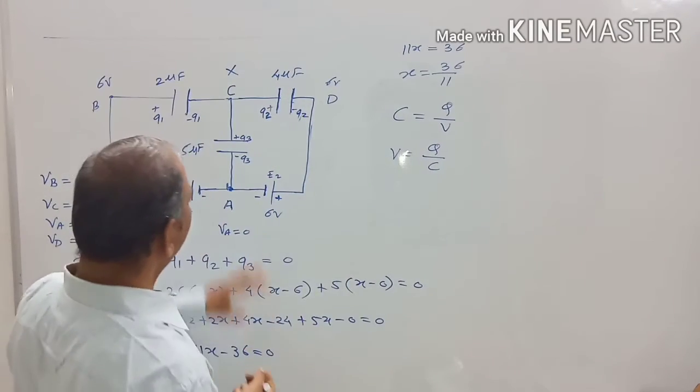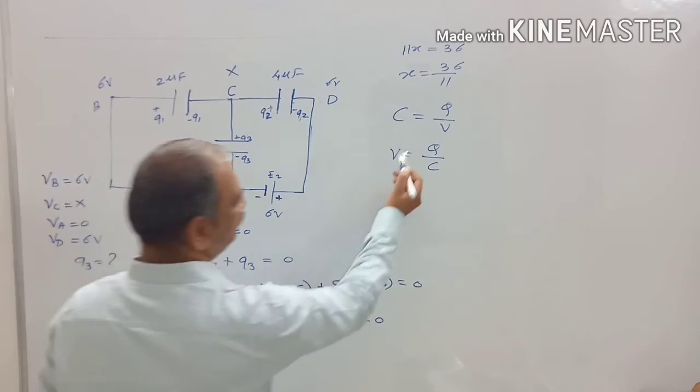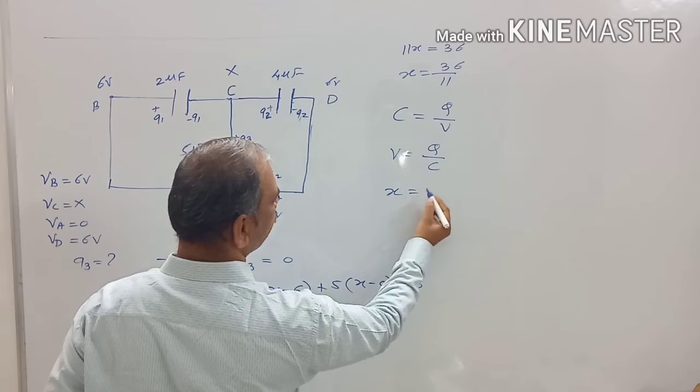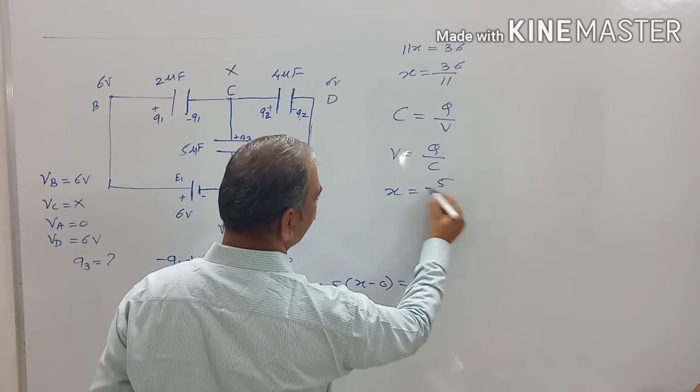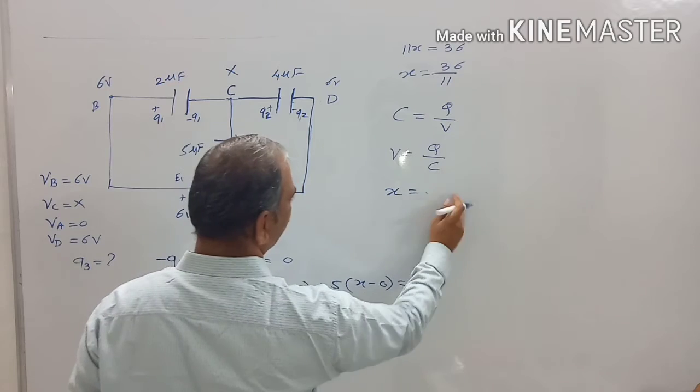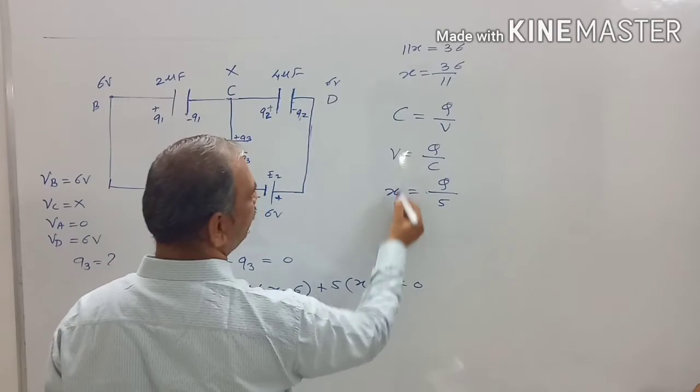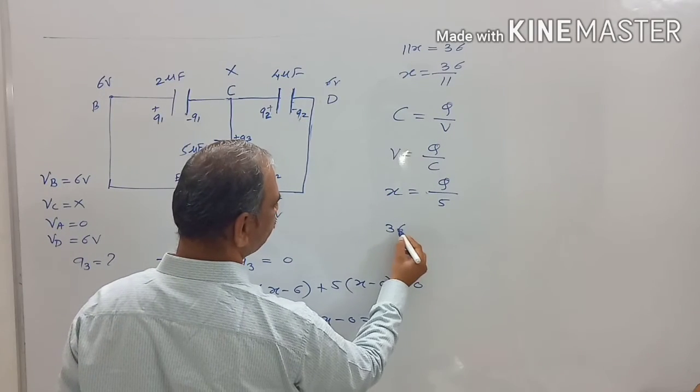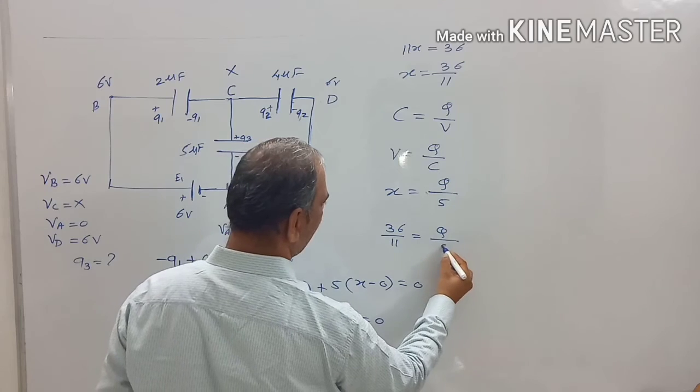What is the value of potential between C and A? That is nothing but X. So here, X. What is the charge? 5 microfarad. Sorry, charge of this is the point of the value of potential. Capacity of this is 5 microfarad. X value of this is 36 upon 11. It is equal to Q upon 5.